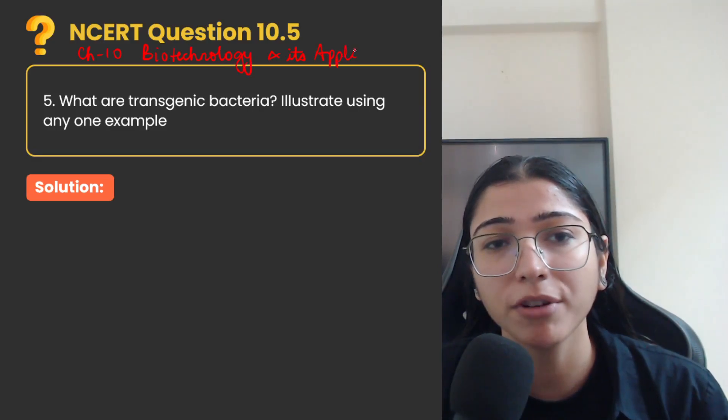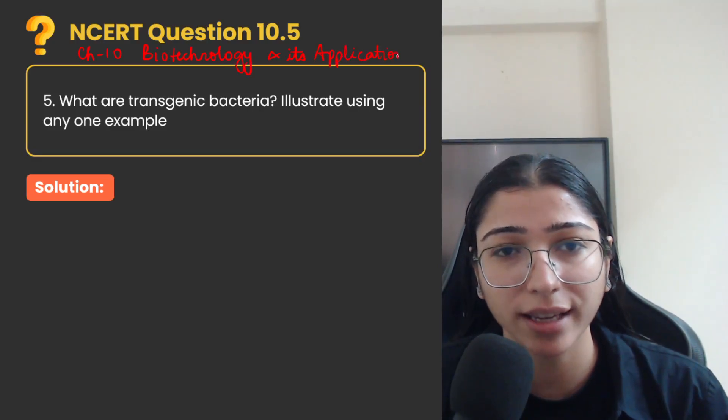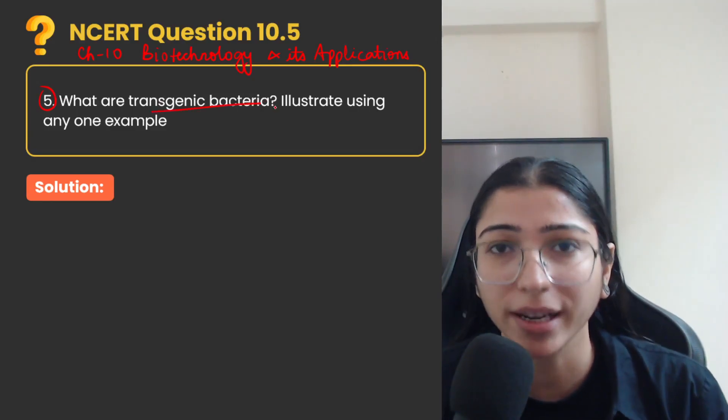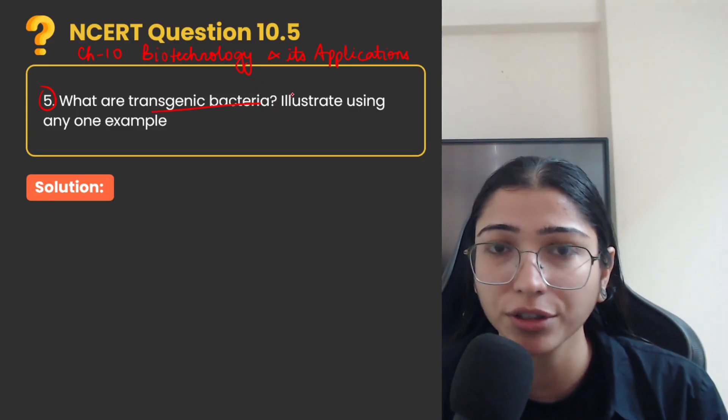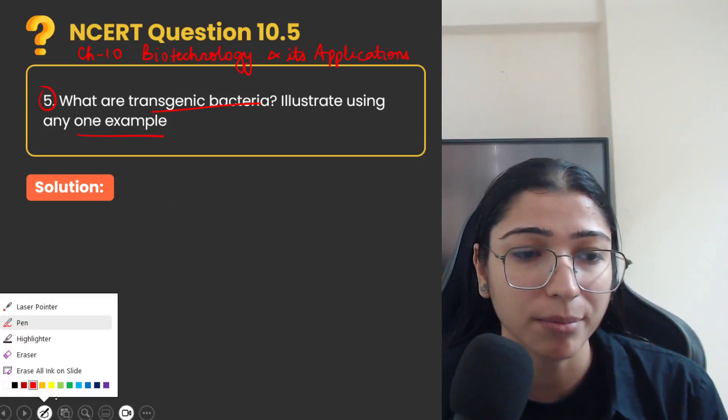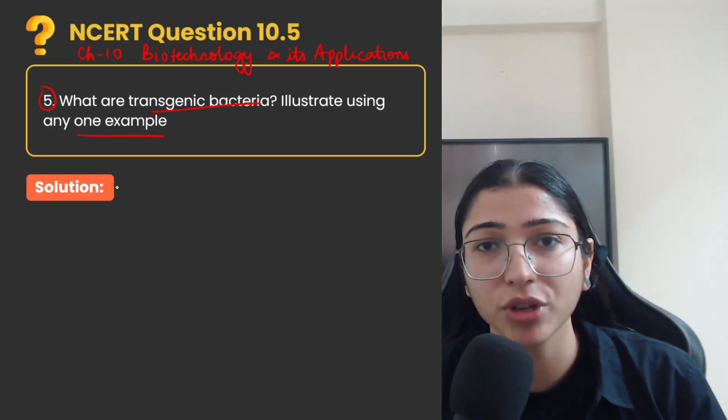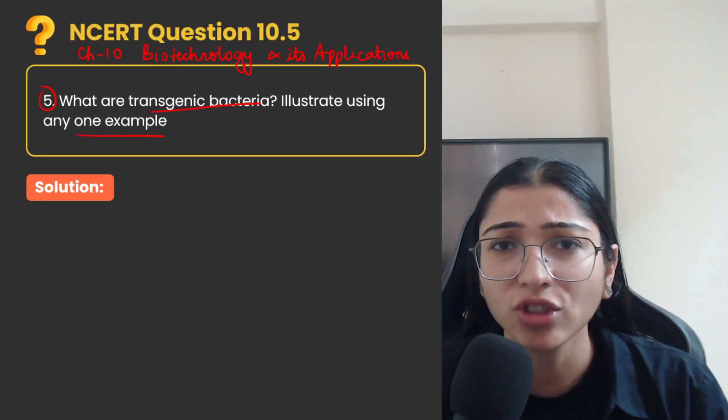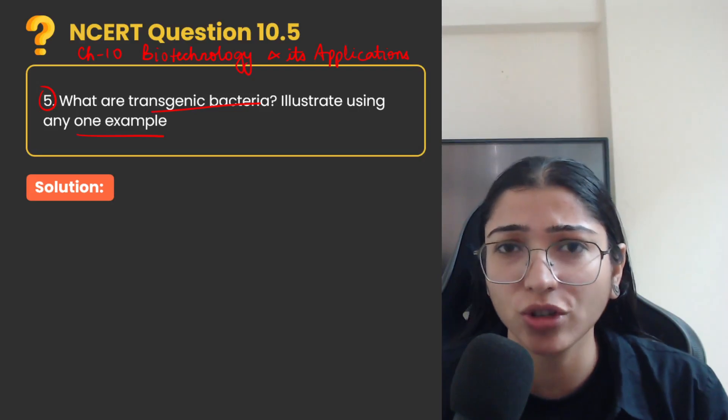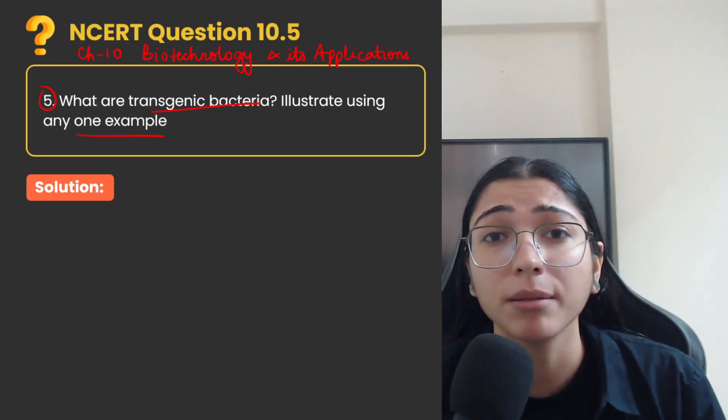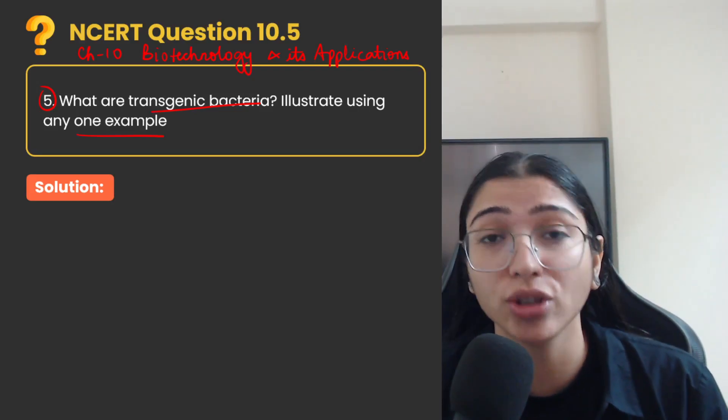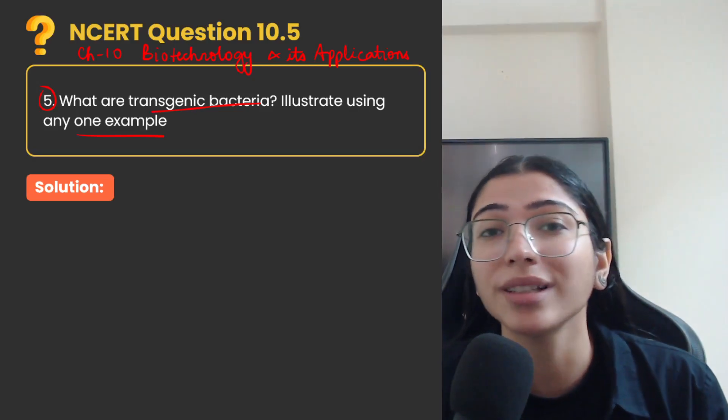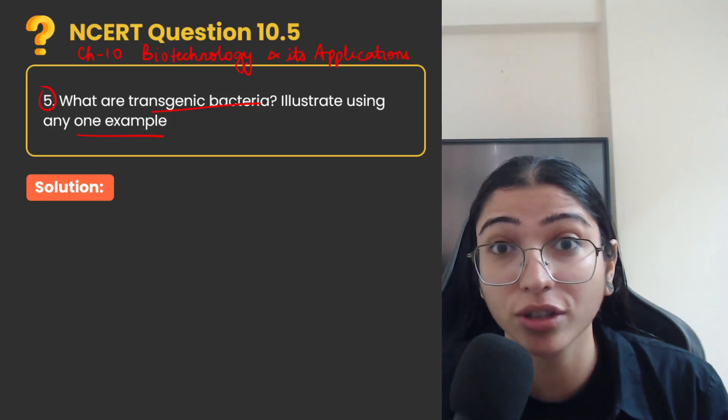We are solving question number 5 from the NCERT back exercise. Question number 5 is asking what are transgenic bacteria? Transgenic bacteria, first of all what are they? Illustrate using one example. Trans means change and genic means genes, so it's a bacteria in which we have changed genes or modified or replaced or added a new set of desired genes in the bacteria.